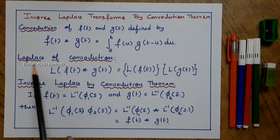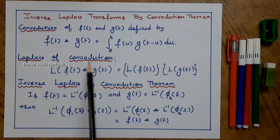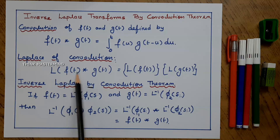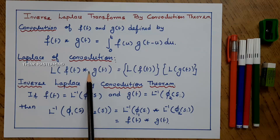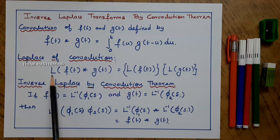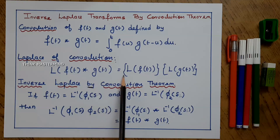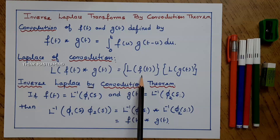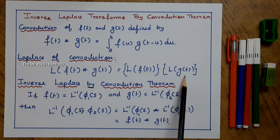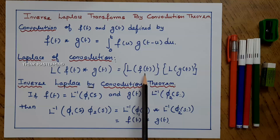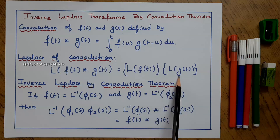Now, we have to see what is the Laplace Transform of Convolution. We are taking f(t) * g(t), where the star represents the convolution. The Laplace Transform of f(t) * g(t) is equal to L{f(t)} into L{g(t)}, that is the product of the Laplace Transforms of their respective functions.